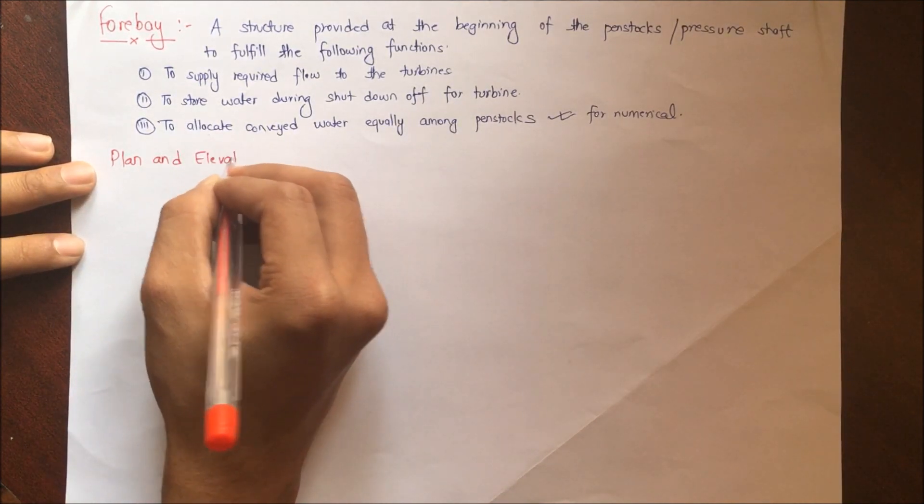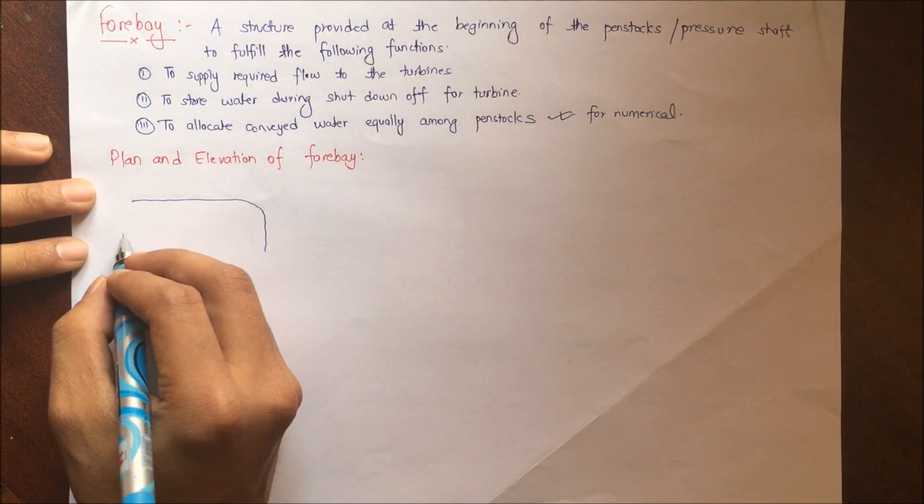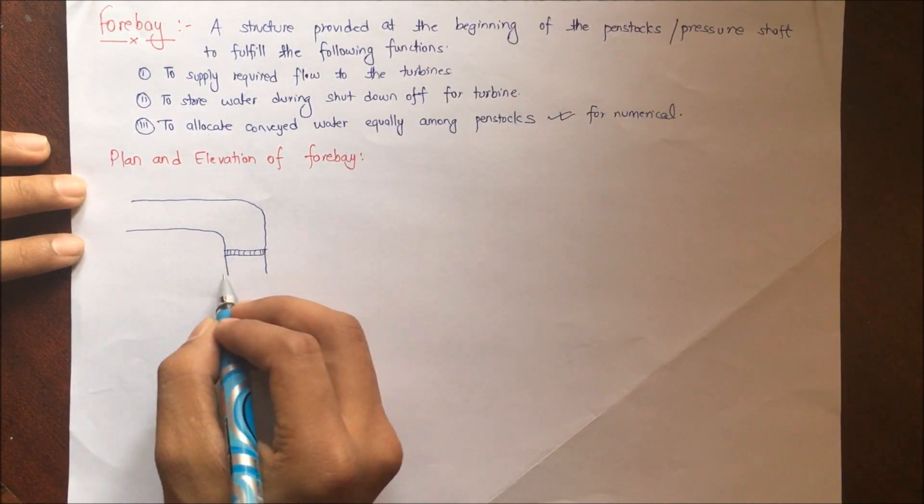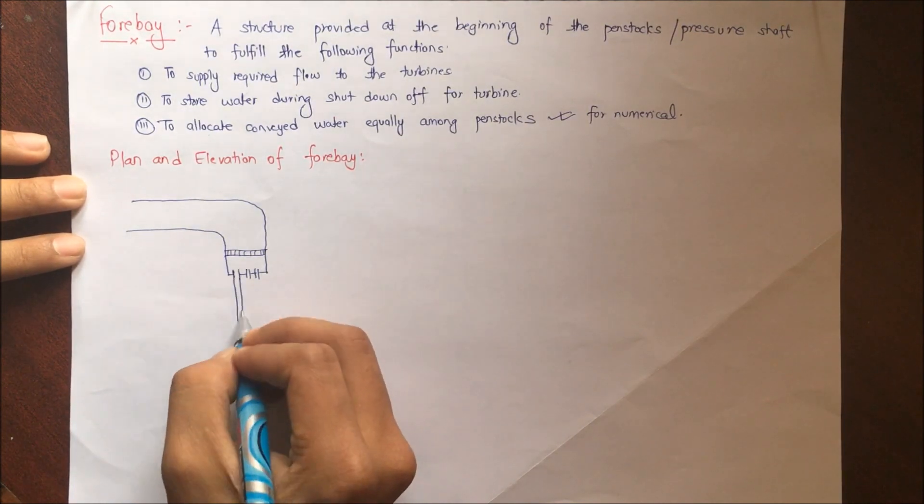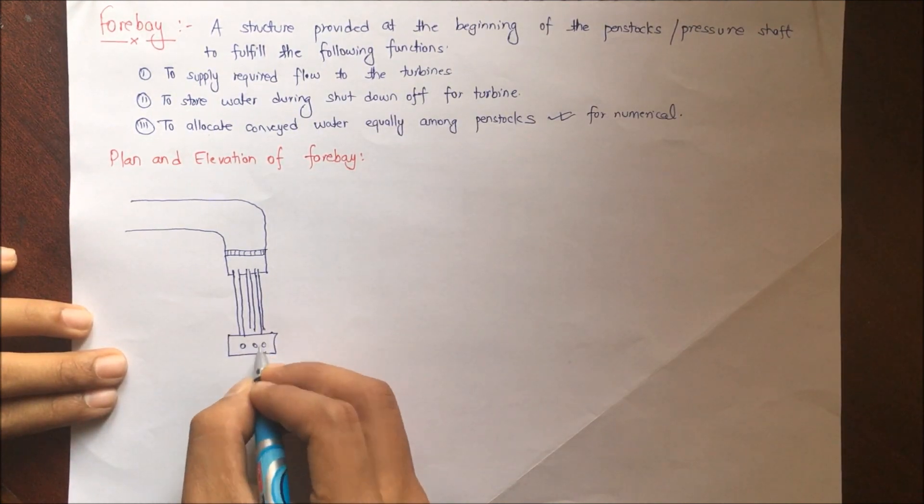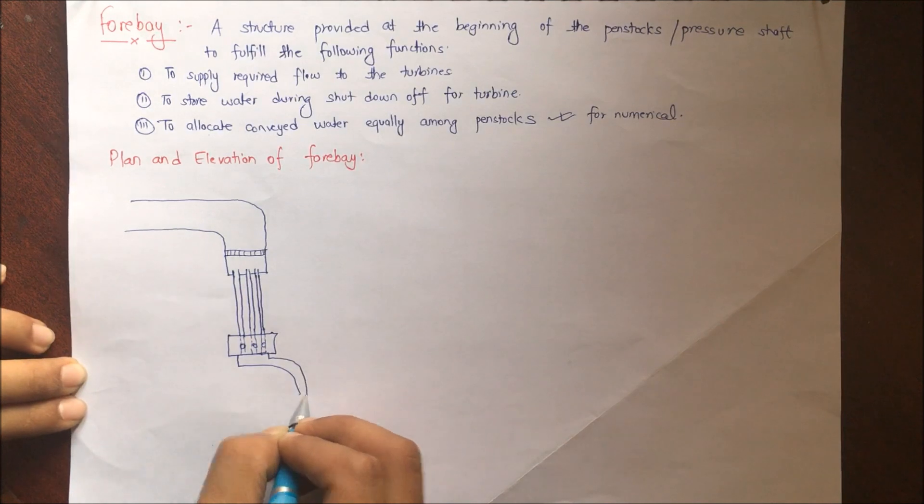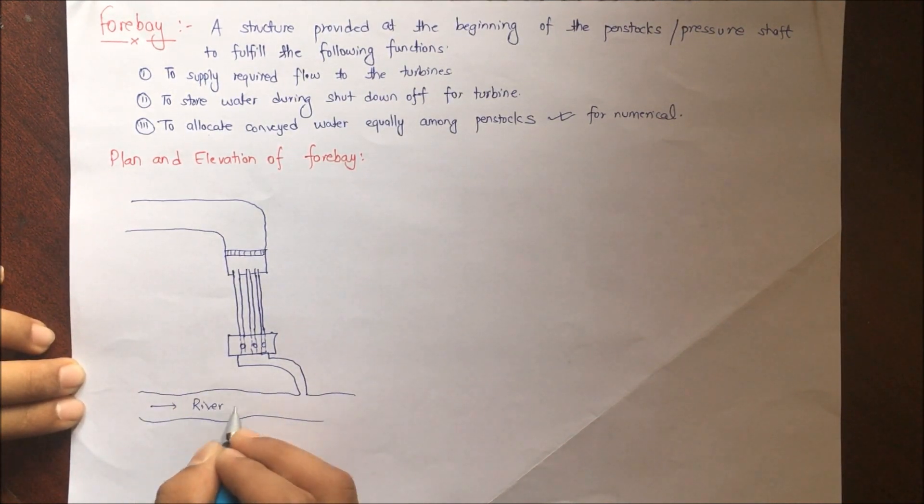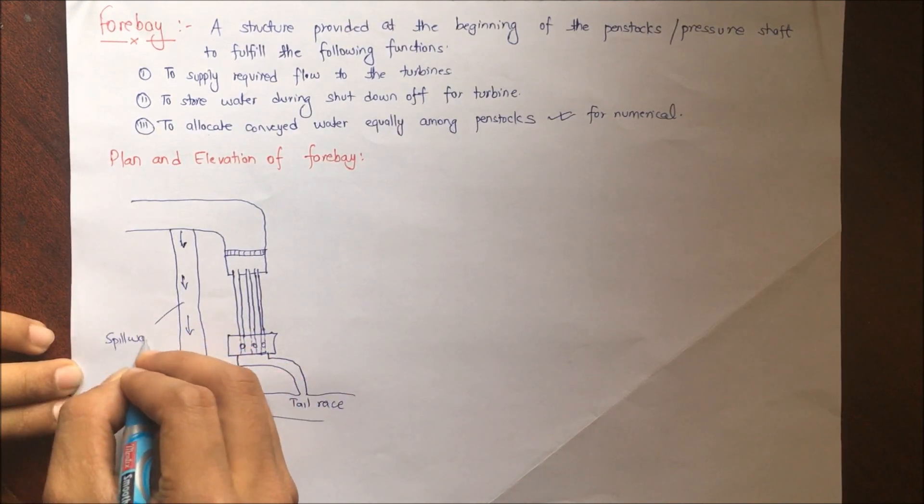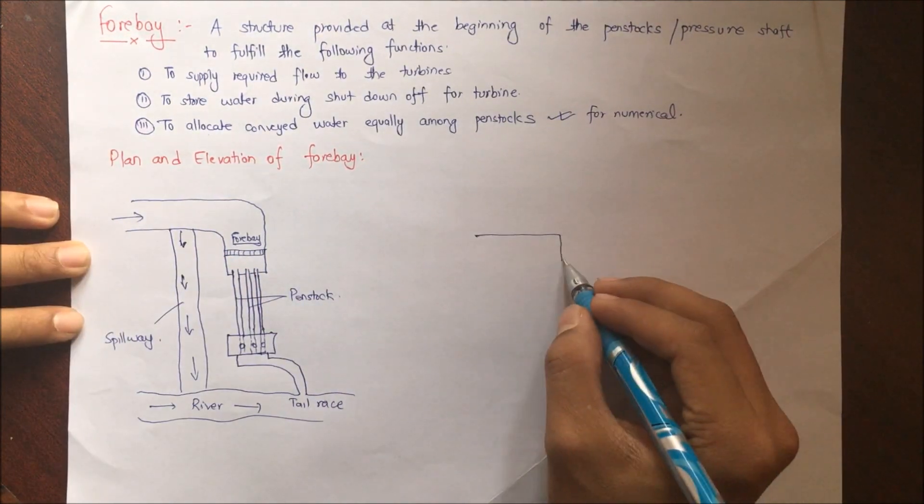Design value of discharge to the turbine has to be distributed among the penstocks, so forbay allocates the water equally among those penstocks. Now, plan and elevation of forbay: this is a forbay, these are three penstocks which go into the powerhouse and these are the turbines and the gates out to the tailrace and joins to the river. Similarly, a spillway is provided at the forbay.